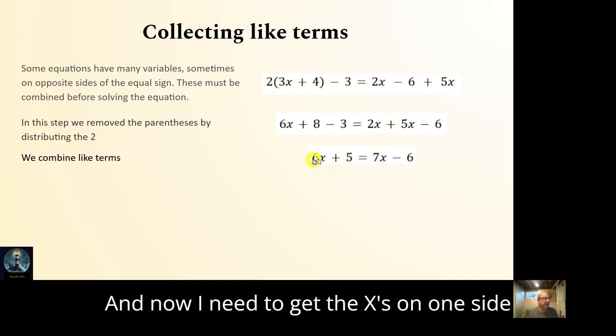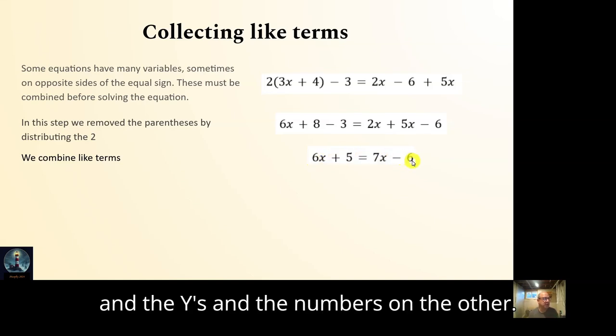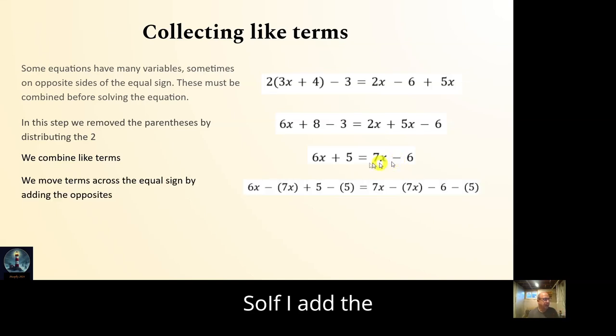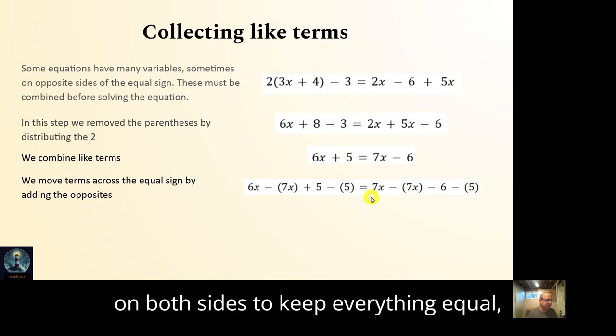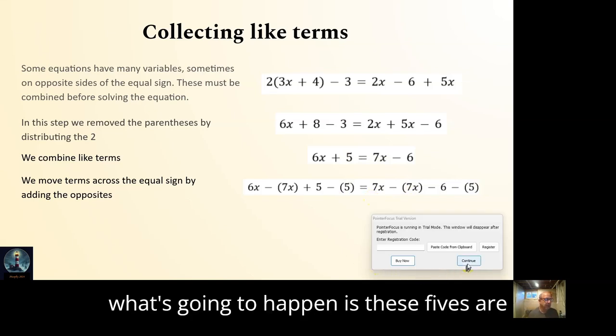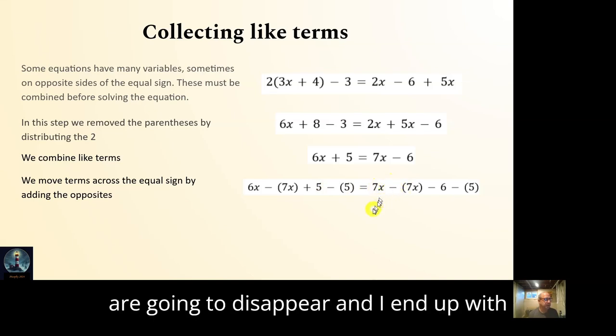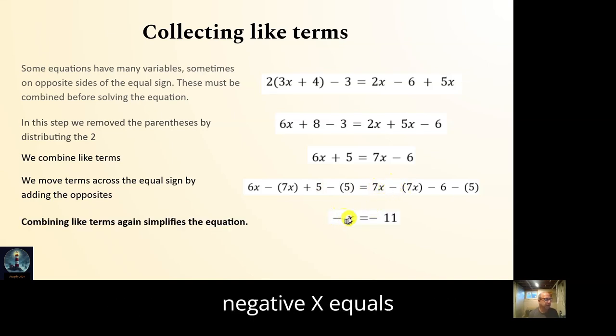And now I need to get the x's on one side and the numbers on the other. So if I add the opposite on both sides, if I add the opposite of 7, which is minus 7x, and if I add the opposite of 5, which is minus 5 on both sides to keep everything equal, what's going to happen is these 5's are going to disappear and these 7x's are going to disappear. And I end up with negative x equals negative 11.